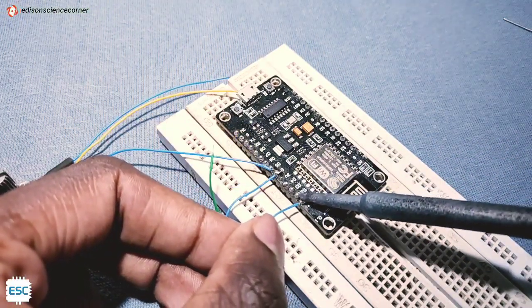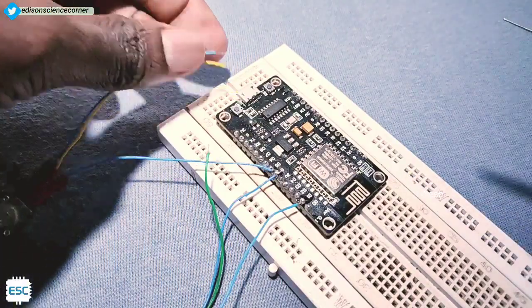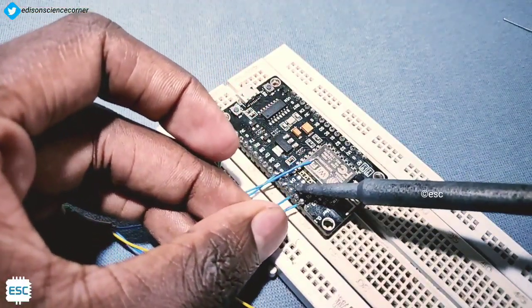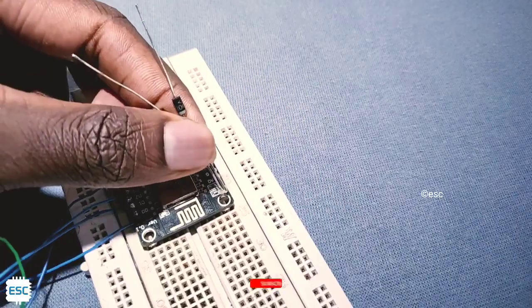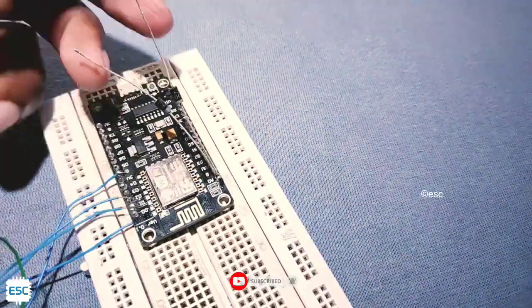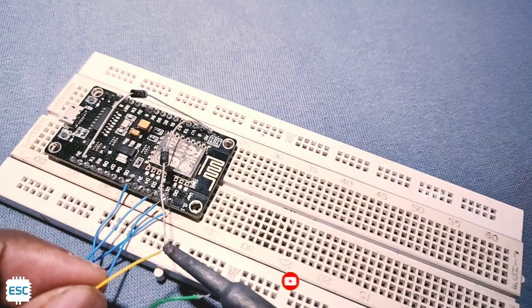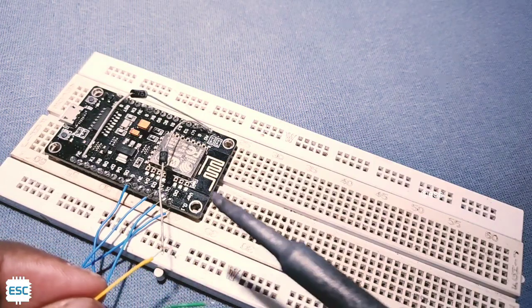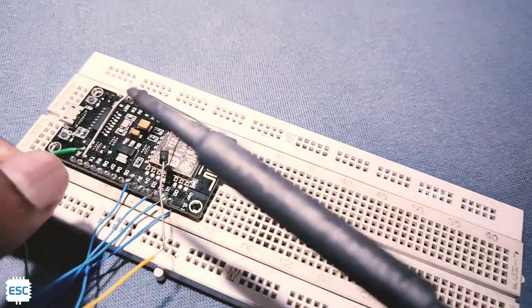Then I connected positive of variable resistors to D1 and D2. Then I attached two diodes to A0 pin. Then I connected the analog pins of variable resistors to diodes. That's all about the circuit.